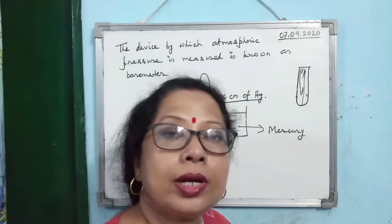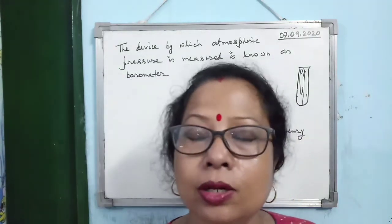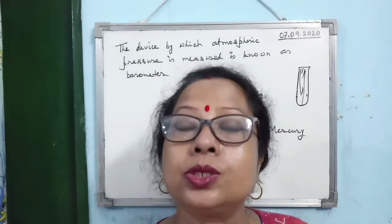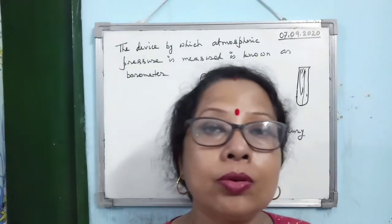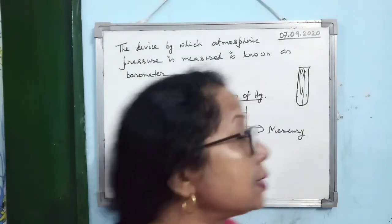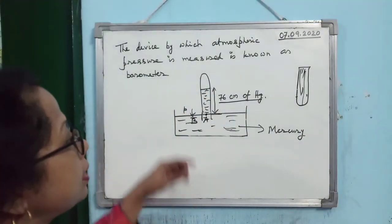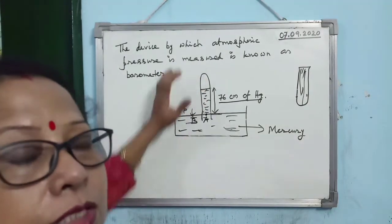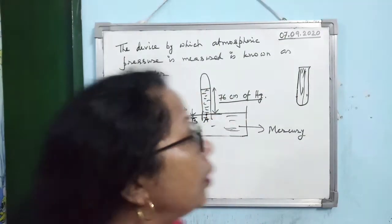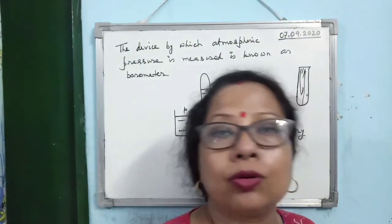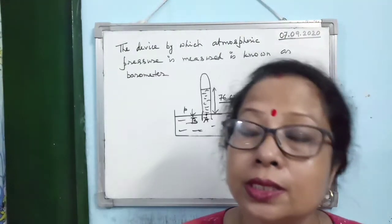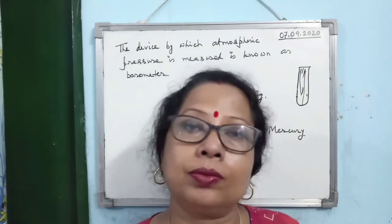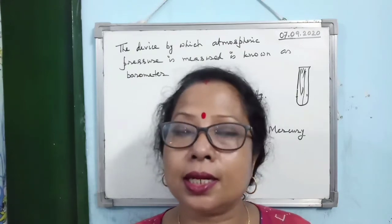Please note these points in your notebook. Second important point: above the mercury column, there will be a vacuum known as Torricelli's vacuum — named after the physicist Torricelli (T-O-R-R-I-C-E-L-L-I).